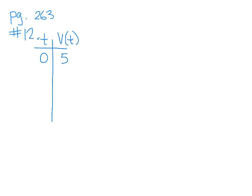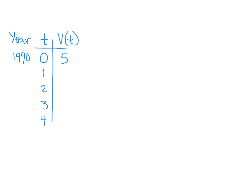I'm putting time equals zero here because that's the beginning of this problem. The year is 1990, but obviously the year is not what's going to be in the formula. Every single year, the value of the card increases by 6%.